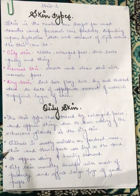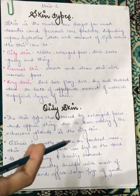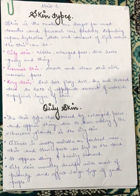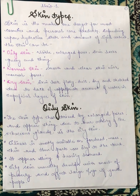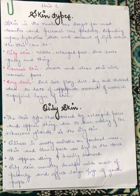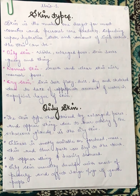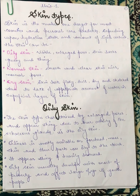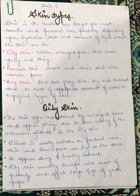Oiliness is mostly found on the forehead, nose, and chin. These parts are oily to the touch and the skin appears shiny and heavily textured. Oily skin usually develops with the onset of puberty and affects a large percentage of young people. When puberty is reached, the skin tends to be more oily compared to younger individuals.